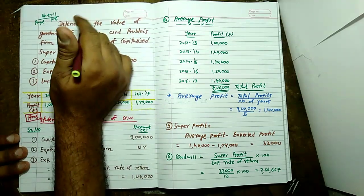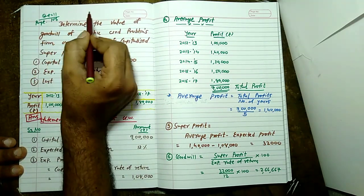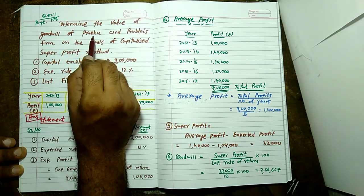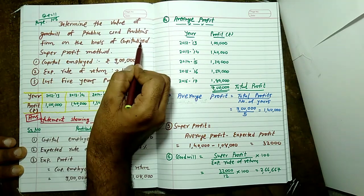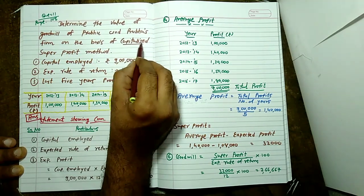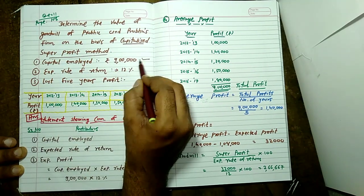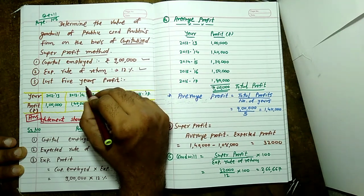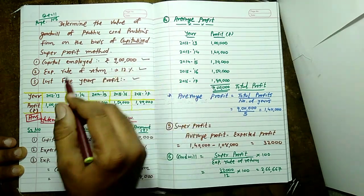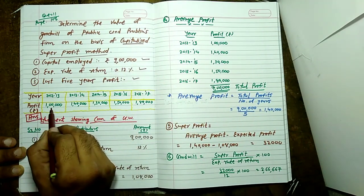In textbook's last question, question number 11: determine the value of goodwill of Prabha and Prabhu's firm on the basis of capitalized super profit method. Capital: 9 lakh. Expected rate of return: 12 percent. Last five years profit: year 2012-13: 1 lakh.